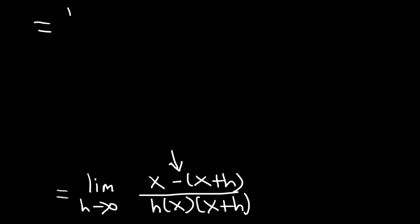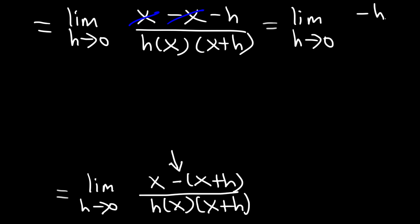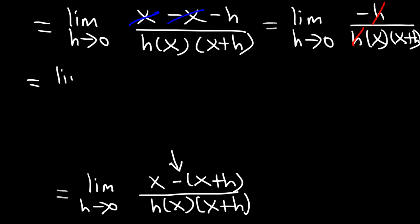Now let's distribute the negative sign. So we're going to have the limit as h approaches 0 of x minus x minus h. x plus negative x adds up to 0. So this gives us the limit as h approaches 0 of negative h divided by h times x times x plus h. Negative h divided by h is negative 1. So now we have the limit as h approaches 0 of negative 1 over x times x plus h.